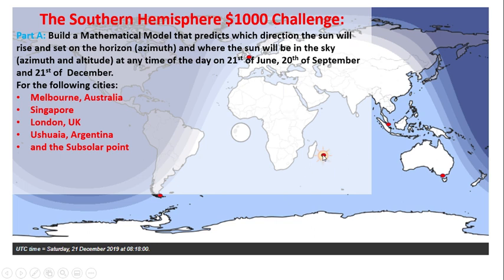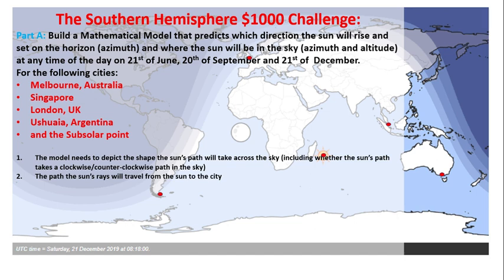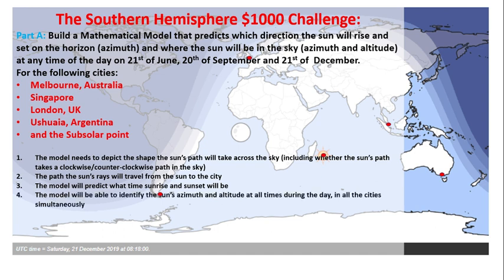The sub-solar point is the point where the Sun is at any given moment, and you need to show the path the Sun's rays are taking from it. The model needs to depict the shape of the Sun's path across the sky, including whether the Sun's path takes a clockwise or counterclockwise direction. The model will also predict what time sunrise and sunset will be, and identify the Sun's azimuth and altitude at all times during the day in all cities simultaneously.